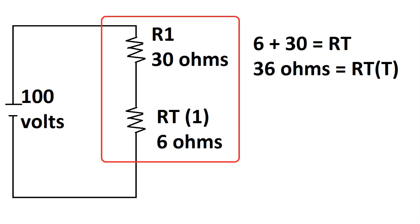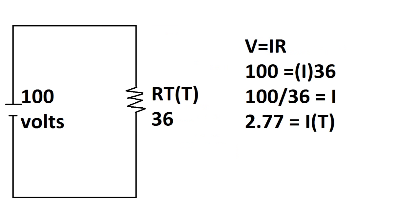We condense those two resistors that were in parallel into one resistor that has 6 ohms resistance. Now we're going to find what the total current in series is. So we take 6 plus 30, and this equals the resistance total — 36 ohms for the total circuit. Recall V equals IR. So we have 100 volts equals current times 36, and rearranging gives us 100 over 36 equals current — so total current is 2.77 amps.